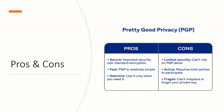PGP requires both parties to participate. You need to create a public key and a private key. The receiver who has the private key will only be able to decrypt the data that was encrypted using the public key. Also, PGP is fragile — you can't misplace or forget your private key. The private key needs to be securely stored so you can use it for decryption.